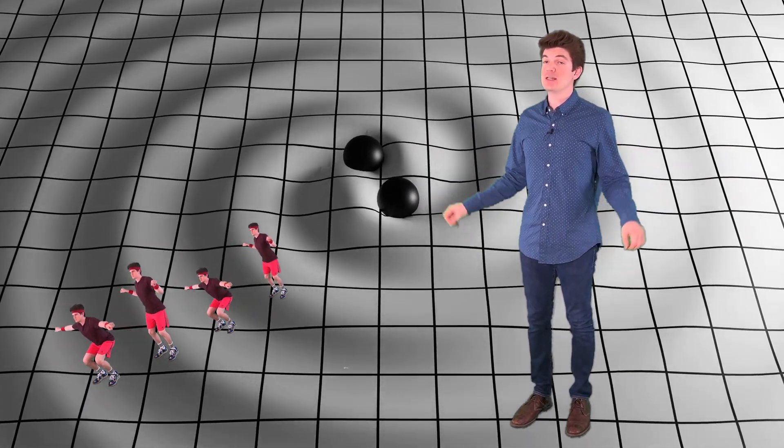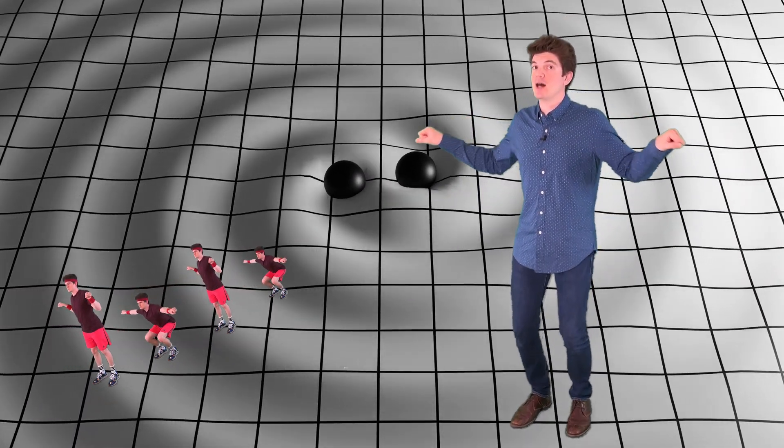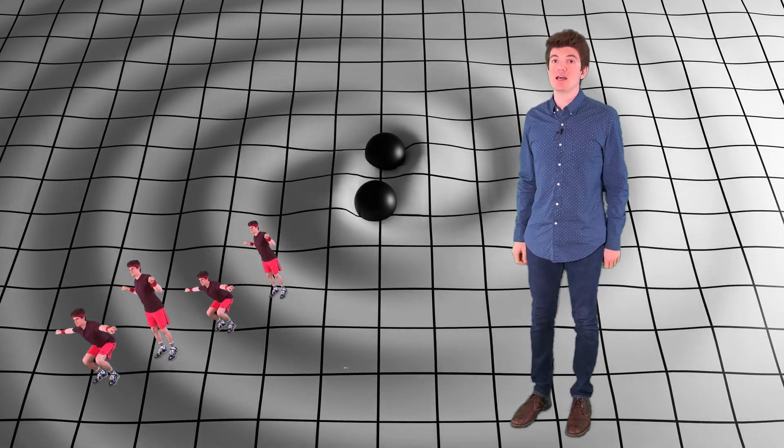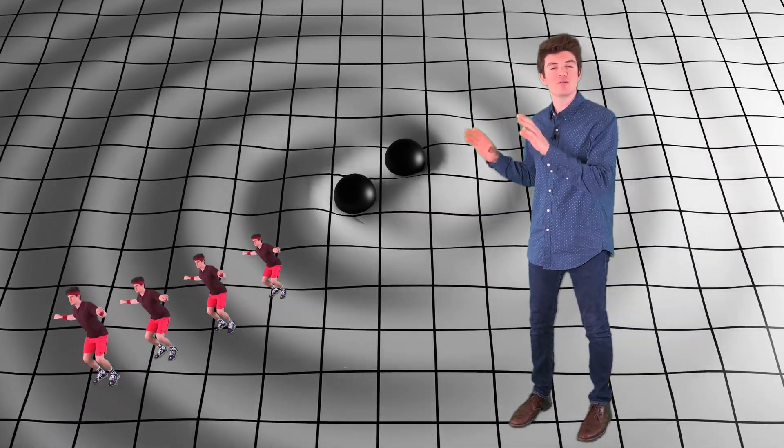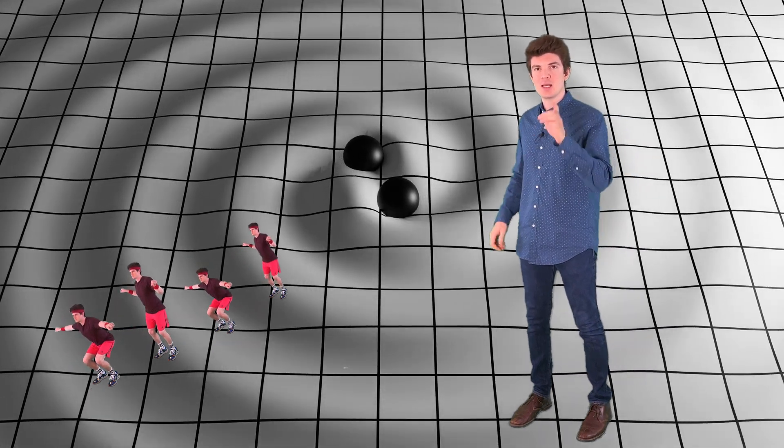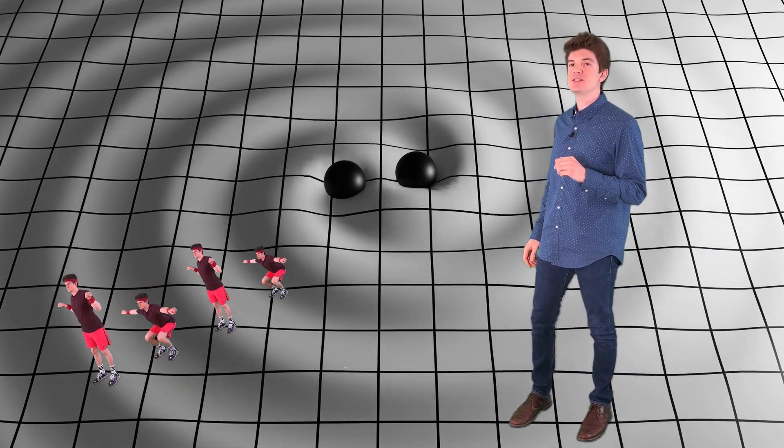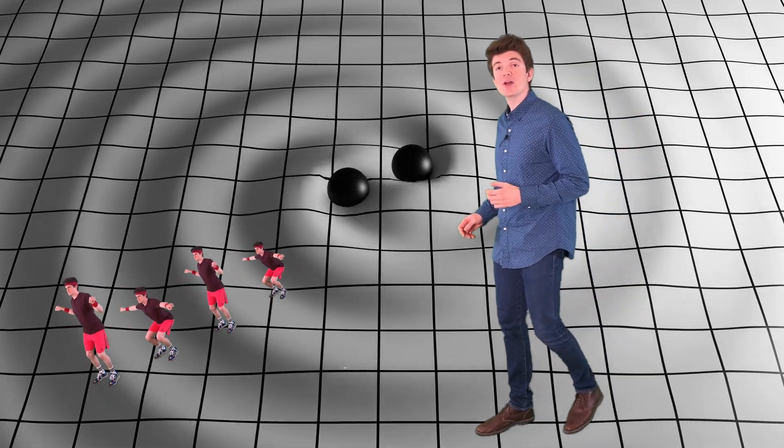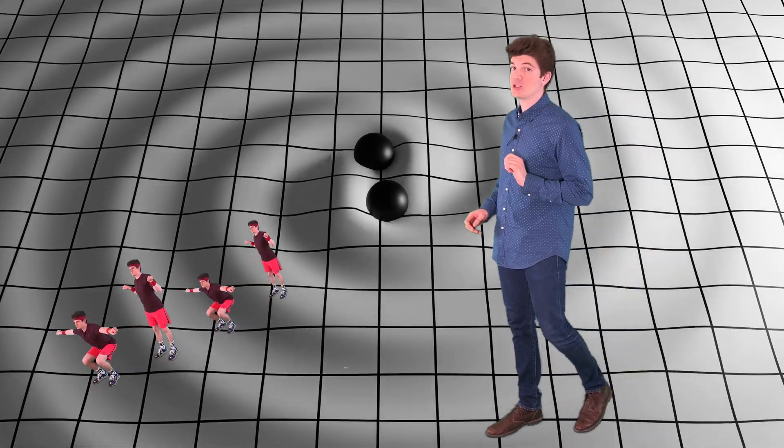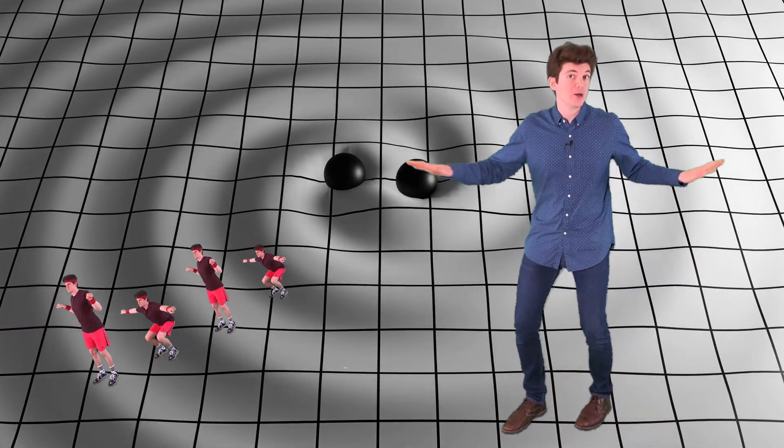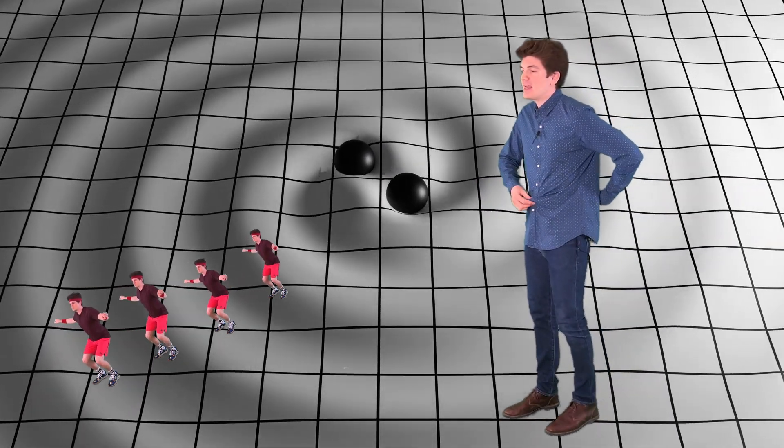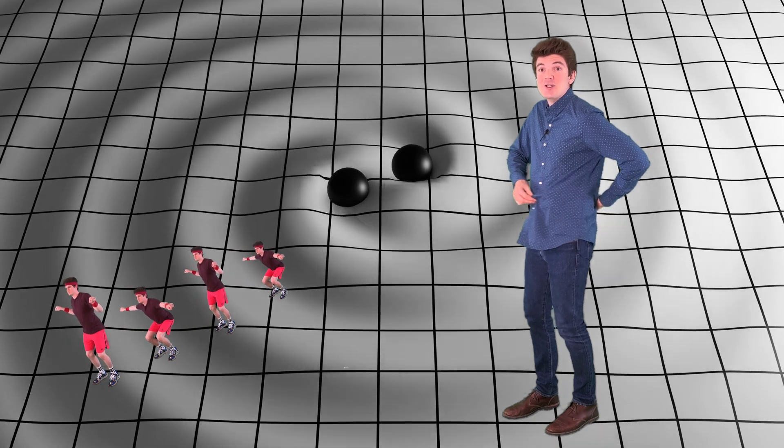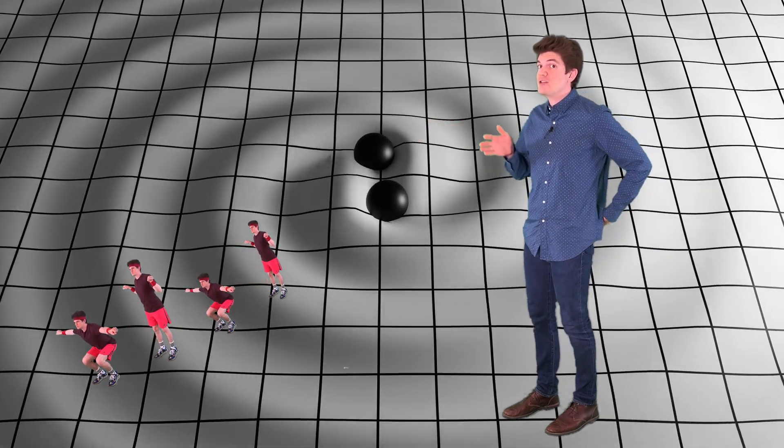But while one dancer is getting tall and skinny, another is getting short and fat. The distortions are different along different points of the wave. But the thing I really want you to notice is that these dancers are not moving forward and backward as the gravitational wave passes. They're not riding the wave. Nor are they getting fatter and skinnier in the direction the wave is traveling.